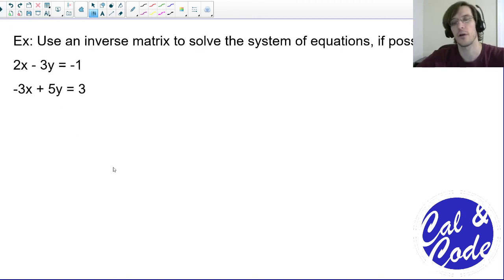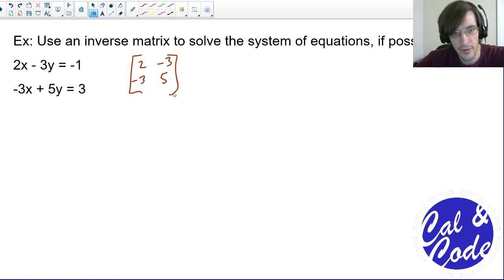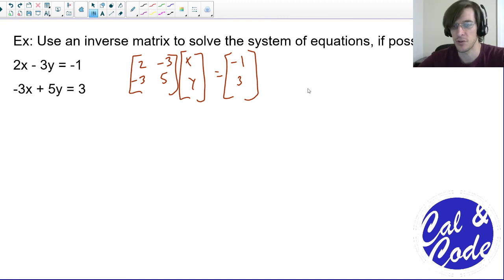For a really simple example, let's just look at a 2 by 2. I can write this as a matrix equation: that's 2, negative 3, negative 3, 5, multiplied by XY, is going to be equal to negative 1, 3. There it is — I've written this as a matrix equation.